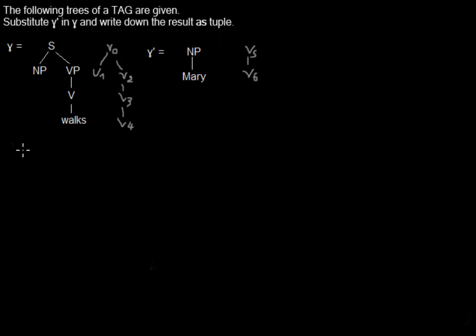So if we are writing down the formal definition of the substitution looks like this. We are having tree gamma and we are substituting into a node V, which in this case will be V1, but in the formal definition it's just V.